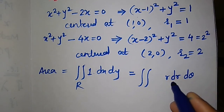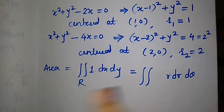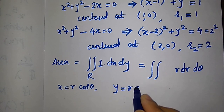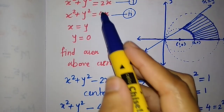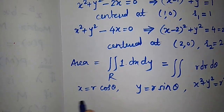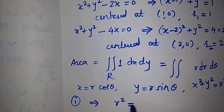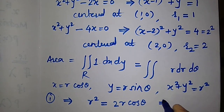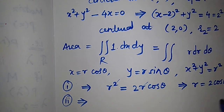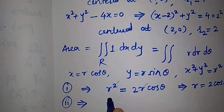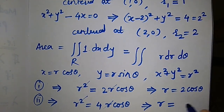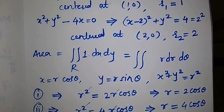From the first circle: r² = 2r cosθ, so r = 2cosθ. From the second circle: r² = 4r cosθ, so r = 4cosθ. The inner circle gives the lower limit and the outer circle gives the upper limit for r, so r varies from 2cosθ to 4cosθ.